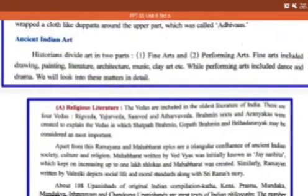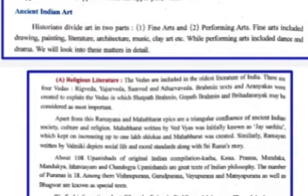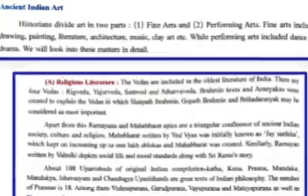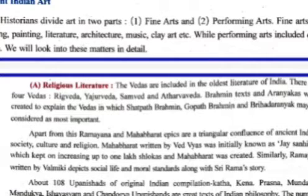Now we will see about ancient Indian art and how people loved art at that time. Historians divided art into two parts: fine art and performing art. Fine art included drawing, painting, literature, architecture, music, and clay art. Performing arts included dance and drama. We will look into this matter in detail.